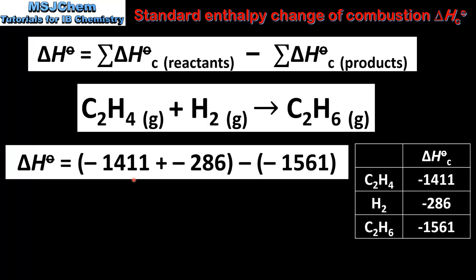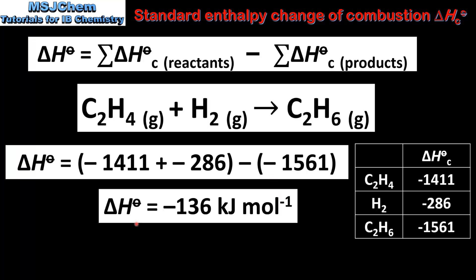Next we input the values into the equation. We have the sum of the enthalpy change of combustion values of the reactants minus the sum of the enthalpy change of combustion values of the products, which gives us an enthalpy change for the reaction of negative 136 kilojoules per mole.